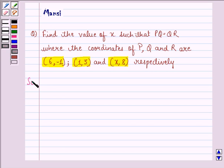Let us start with the solution to this question. First of all, let the point P equal (6,-1) that is given to us in the question. Q is (1,3) and R is (x,8).